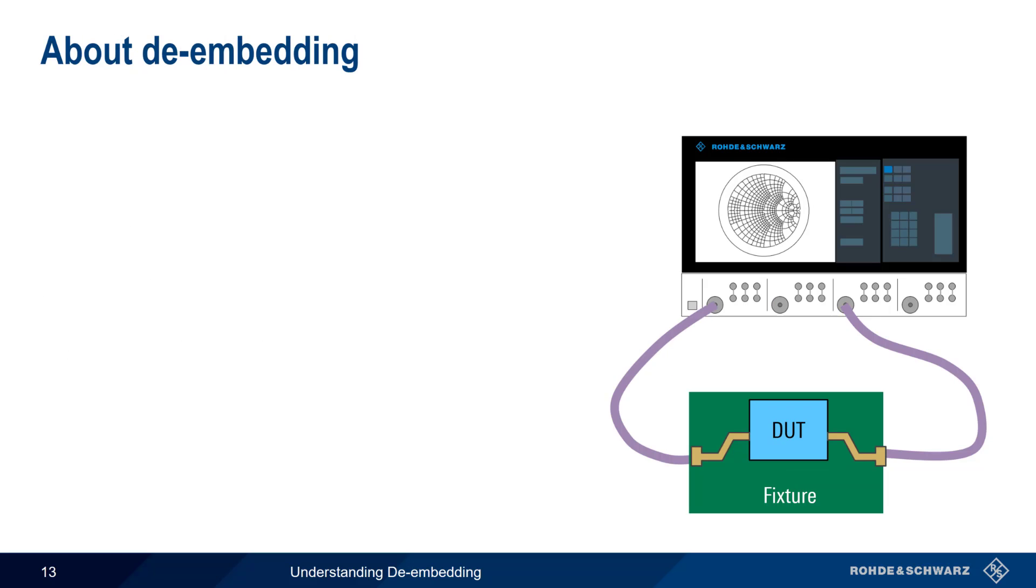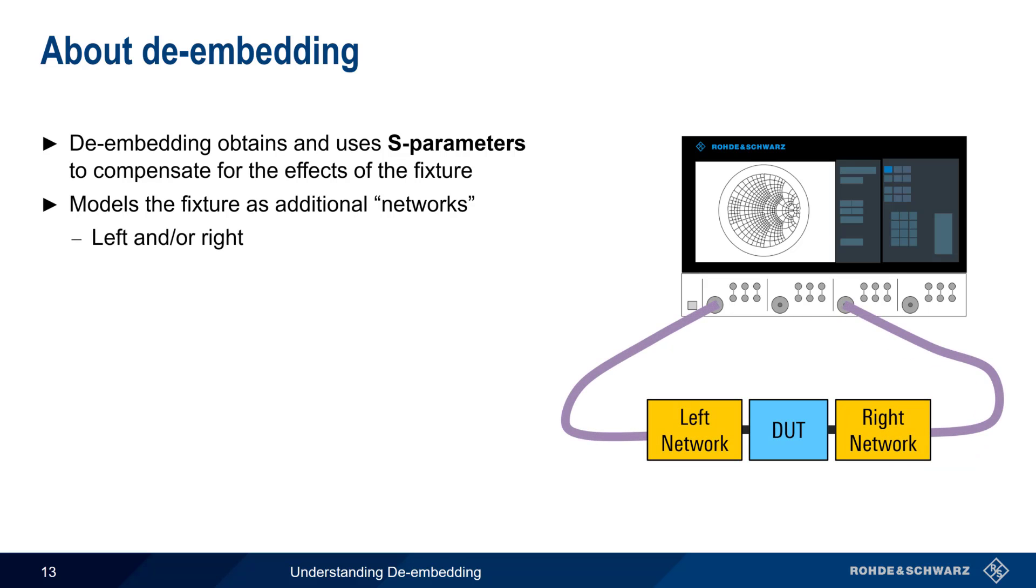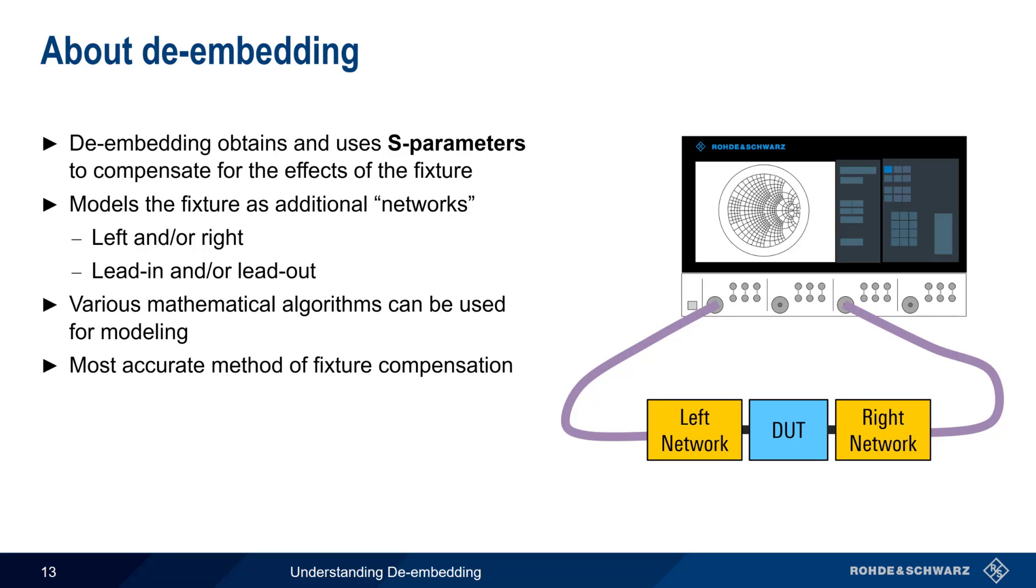Although some people might refer to all methods of fixture compensation as de-embedding, in this presentation we're using the term de-embedding to describe fixture compensation by means of S-parameters. The way that this is done in de-embedding is by modeling the fixture as one or more additional networks, sometimes referred to as left and right, or lead in and lead out. The characteristics or S-parameters of these networks are known or can be determined. This does, of course, require additional measurements and calibration standards in order to create these mathematically modeled networks. Different mathematical algorithms can then be used to remove the effect of the fixtures from the measurements. In many cases, de-embedding produces the most accurate results for fixture compensation. But this often comes at the cost of additional complexity. In particular, it can be difficult to obtain the S-parameters for the fixtures or networks. Some fixture vendors may supply these parameters, but most often users have to determine or derive these values themselves, especially when they're creating their own custom fixtures.